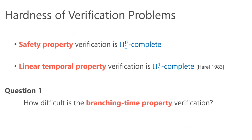The first result is about hardness. The hardness of safety property verification and linear temporal property verification is well-known. The safety property verification problem is Π⁰₁-complete, and the linear temporal property verification problem is Π¹₁-complete. It is natural to ask how difficult the branching time property verification problem is. Perhaps surprisingly, I could not find any paper that directly answers this question.